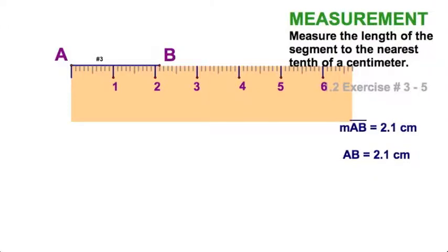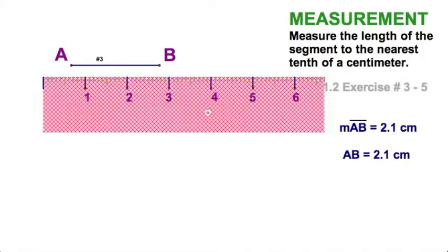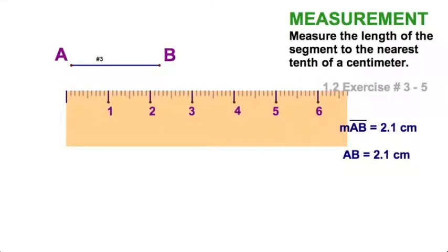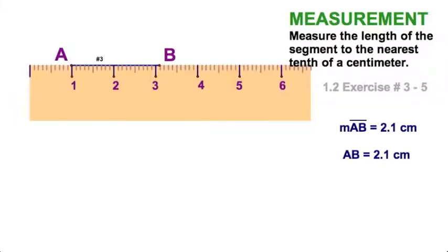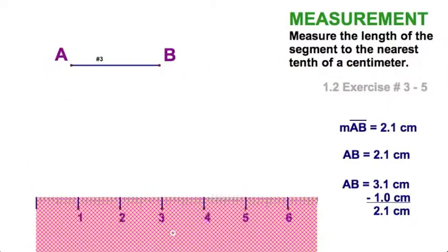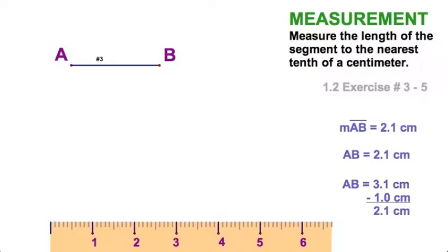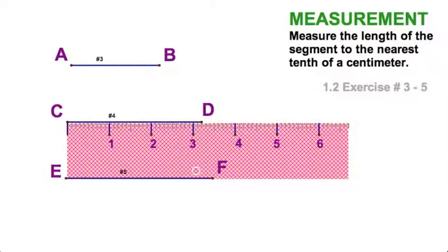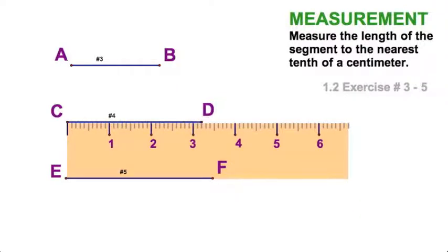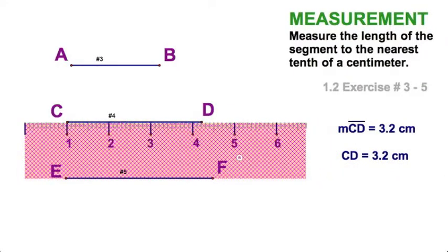I could write it as 2.1 centimeters. Your chemistry, math, or science teachers — and your engineering class — will tell you: if the end of the ruler is messed up, why not measure from the one? Then you'd see you're at 3.1 and subtract the one, giving you again two and one-tenth centimeters. Let's do the other exercises. The next one looks like three point two centimeters.